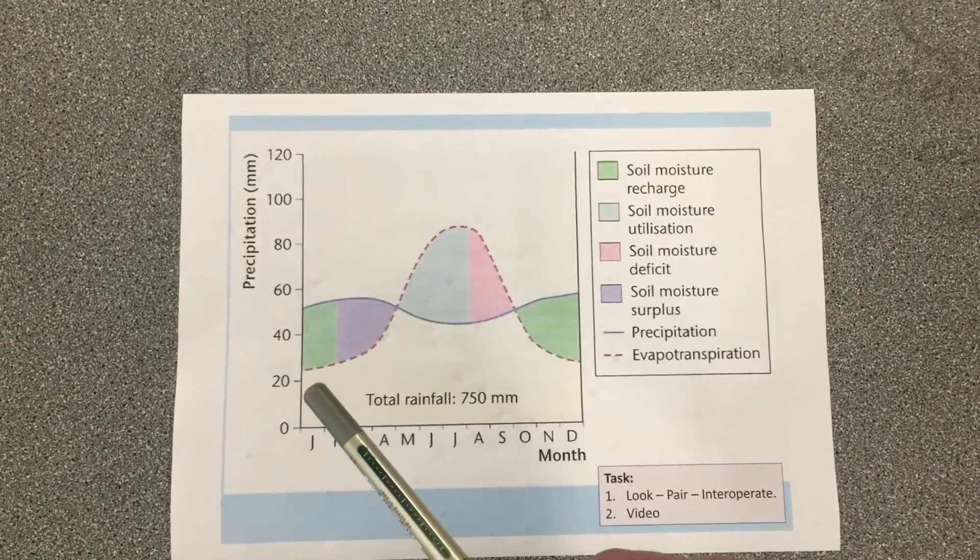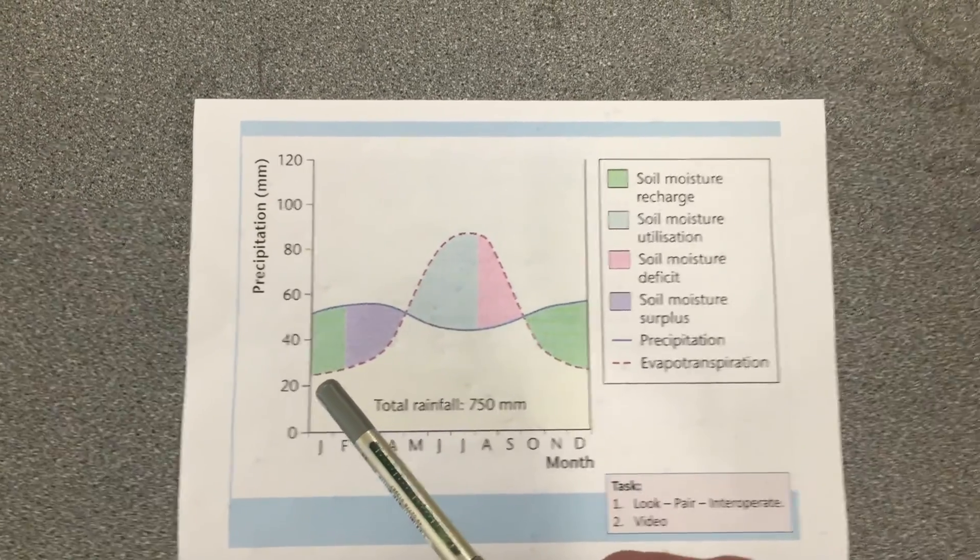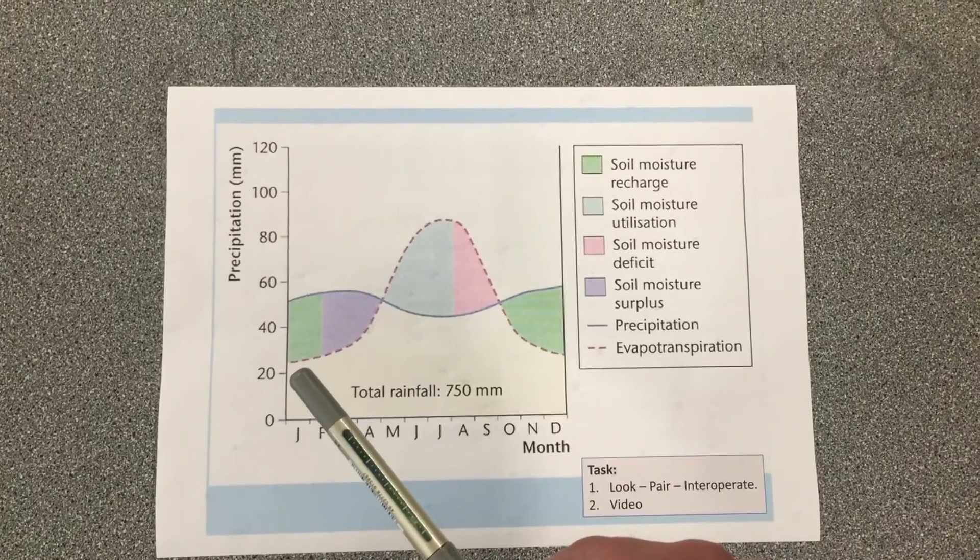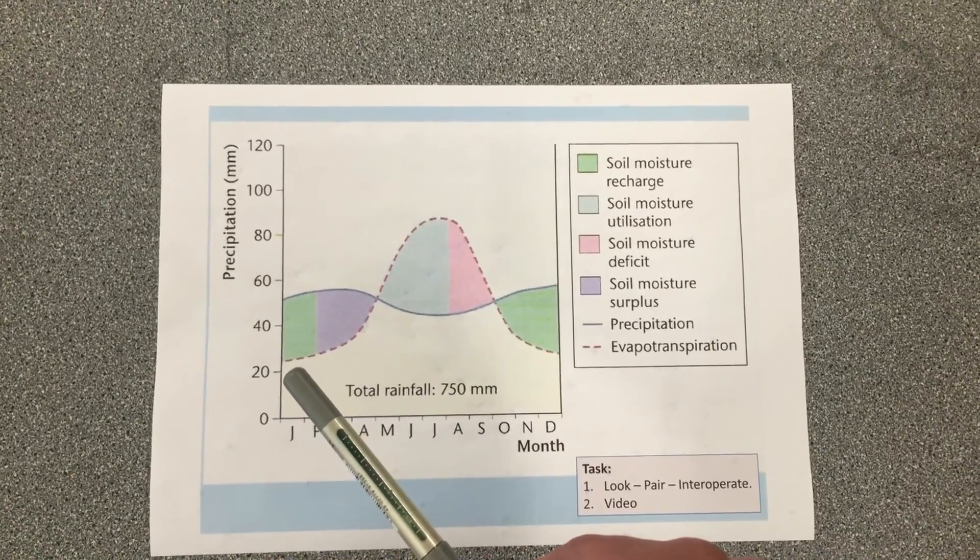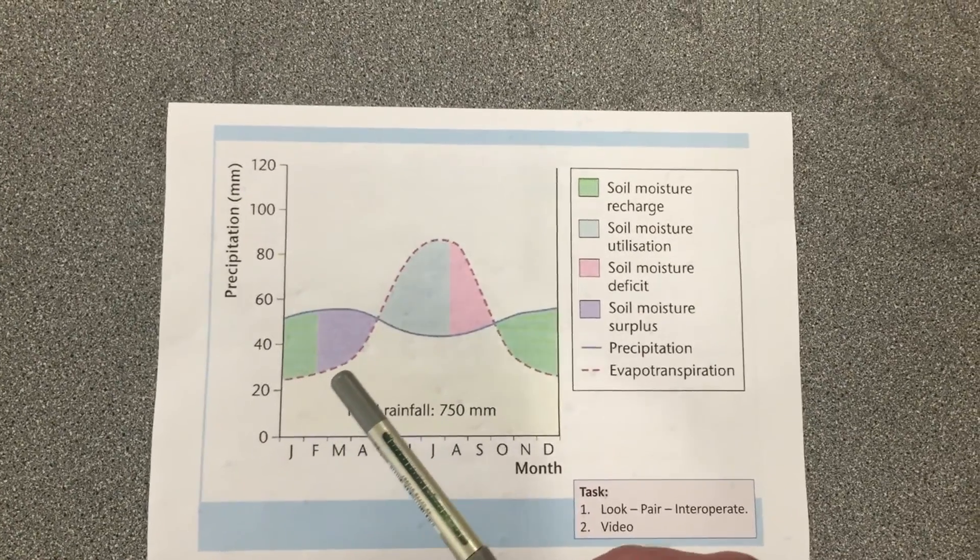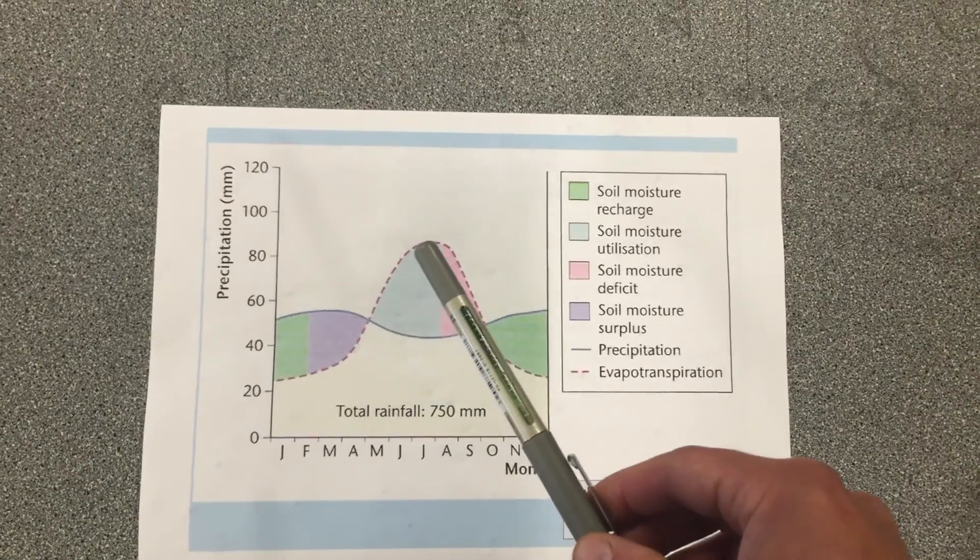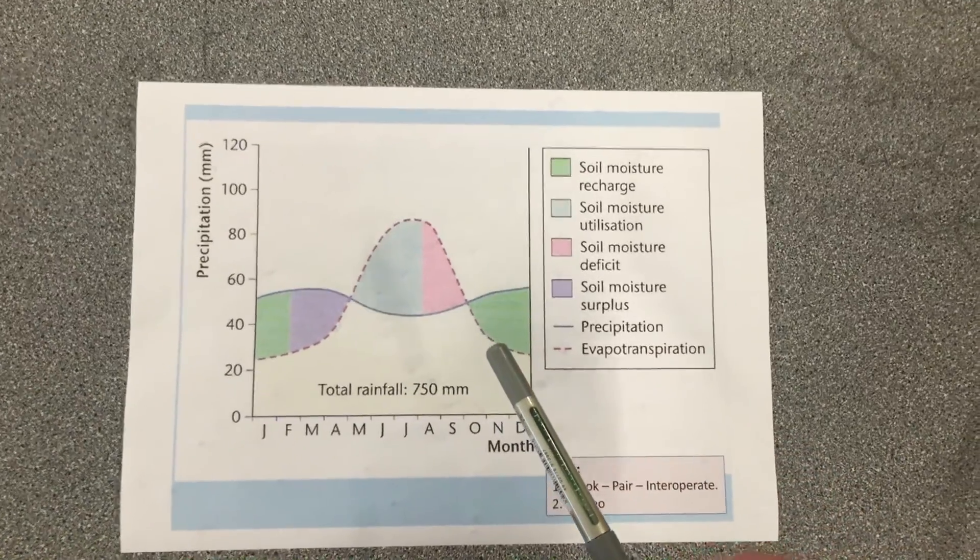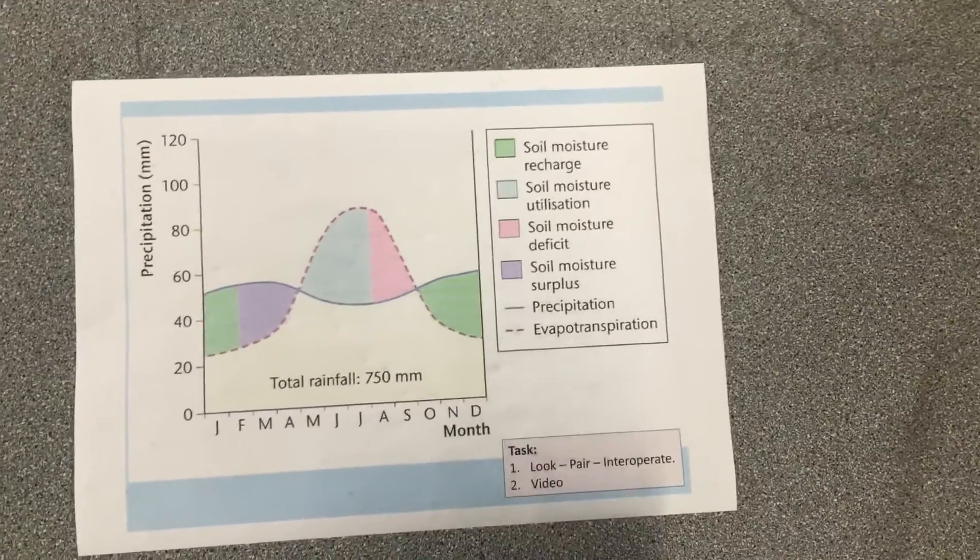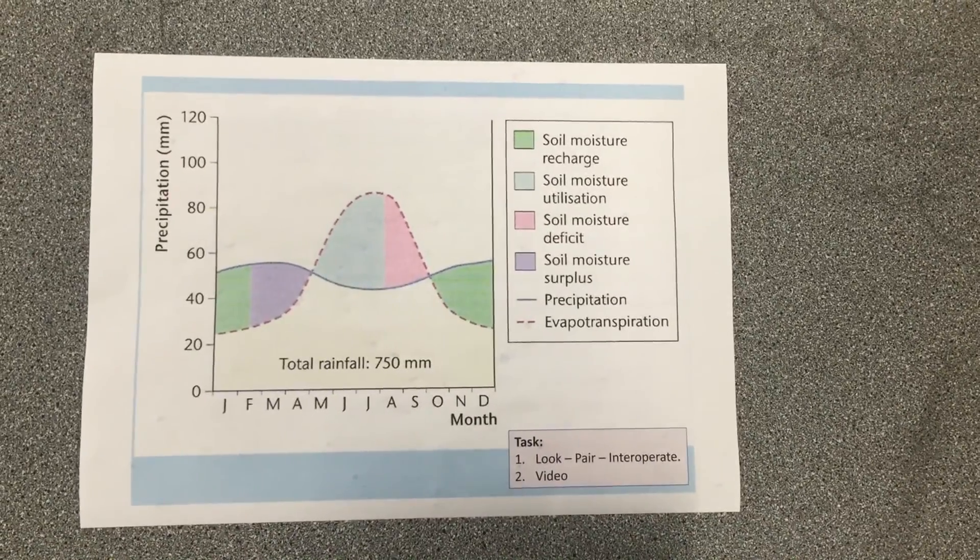Now evapotranspiration is going to be different in the winter to the summer. Obviously the power of the sun is not that high and it's not that hot in the winter, so we've got low levels of evapotranspiration. But as we move through the summer months when the sun is nice and sunny, we can see that evapotranspiration significantly increases.